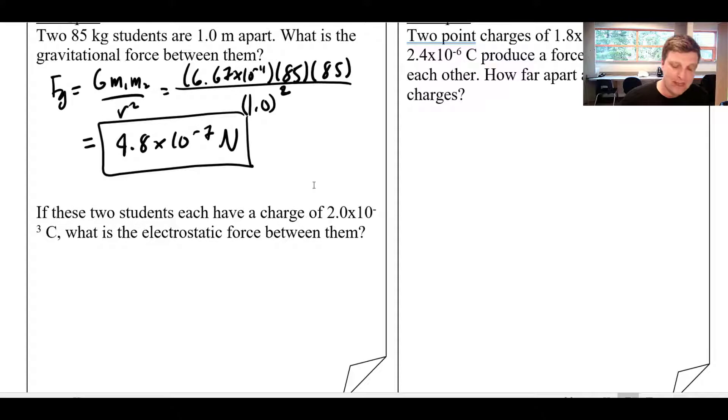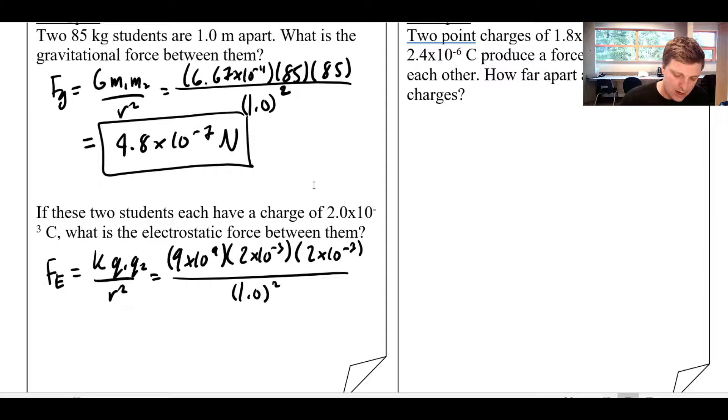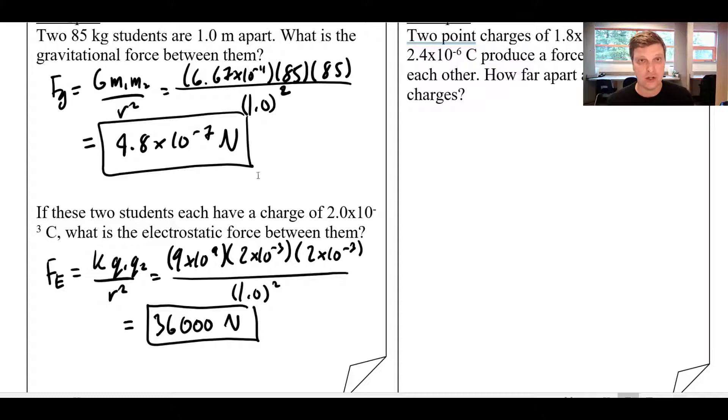However, if they each had a charge of 2 millicoulombs, and a millicoulomb doesn't sound like a lot, but we're going to see that would be a pretty substantial charge. The electrostatic force between them would be K times Q1 times Q2 over R squared, which would be 9 times 10 to the 9, multiply that by 2 times 10 to the negative 3, and then 2 times 10 to the negative 3 again, all divided by one meter apart squared. And this answer comes out to be 36,000 newtons. So what sounded like two very small charges of two millicoulombs would create enough force to kind of throw them across the room, which probably wouldn't be too good. We can see that when dealing with charges, it doesn't take a lot to create a substantial amount of force.